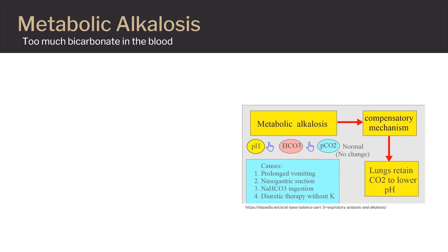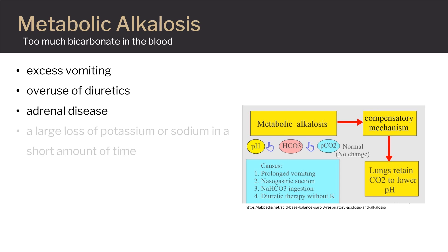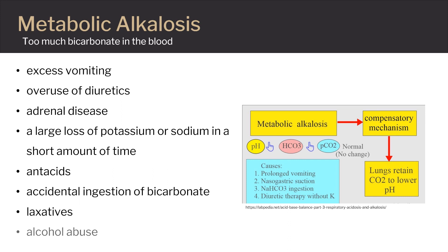Metabolic alkalosis develops when your body loses too much acid or gains too much base. This can be attributed to excessive vomiting, which causes electrolyte loss, overuse of diuretics, adrenal disease, a large loss of potassium or sodium in a short amount of time, antacids, accidental ingestion of bicarbonate, which can be found in baking soda, laxatives, and alcohol abuse.